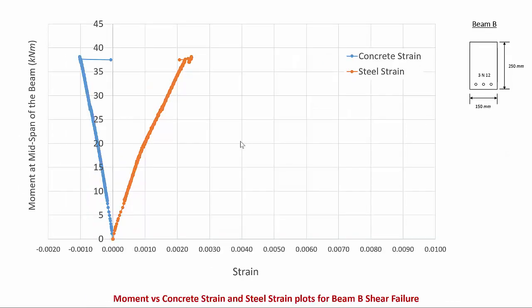Looking at the concrete strain and steel strain for beam B, which failed in shear: the blue plot shows the concrete strain, with a maximum of 0.001 — nowhere near the crushing strain — indicating no initiation of concrete crushing. The orange line shows the steel strain, which was below 0.0025, meaning the steel had not started yielding. The beam failed before yielding of the steel, which is why it was such an abrupt and sudden failure.